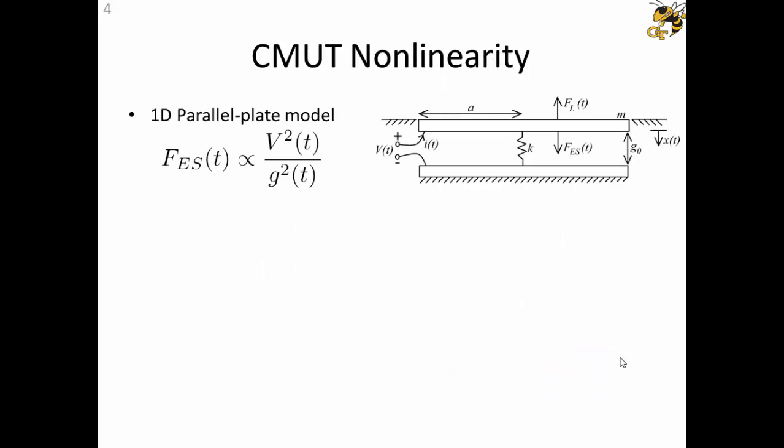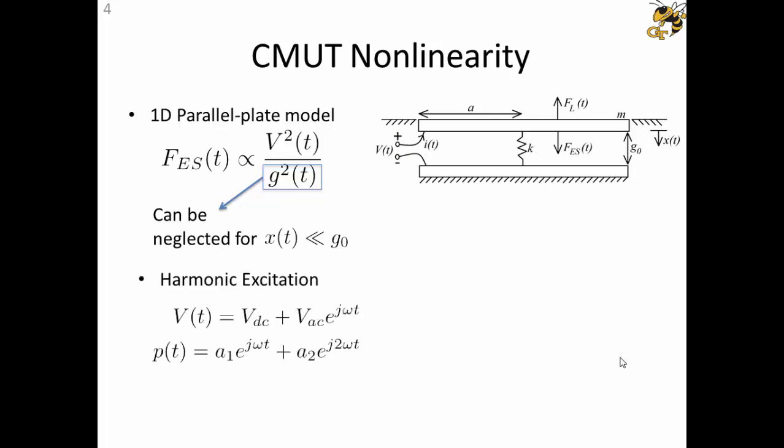A simple way to look at CMUT nonlinearity is based on the 1D parallel plate description of a single CMUT element, which describes the device nonlinearity due to electrostatic actuation as voltage-squared or instantaneous gap-squared, depending on the electrostatic force. For small signal, if the displacements are smaller than the initial gap at rest, the gap dependence can be dropped. Then this gives us a nice quadratic relationship between drive signal and the transmitted pressure and also the return echo from a linear target.